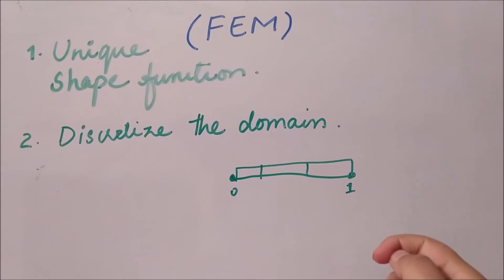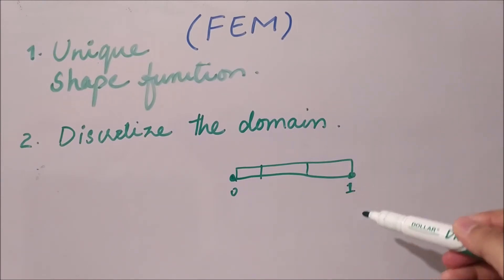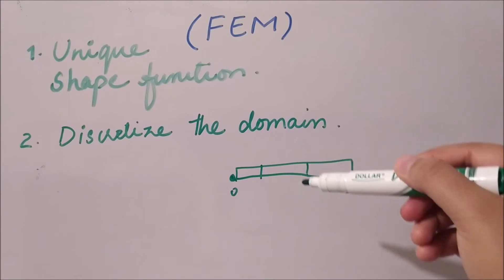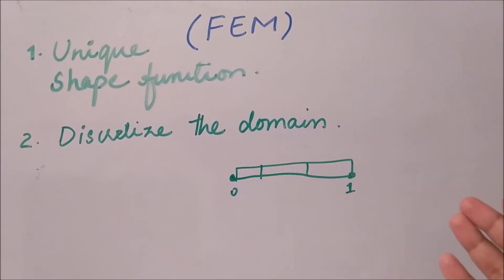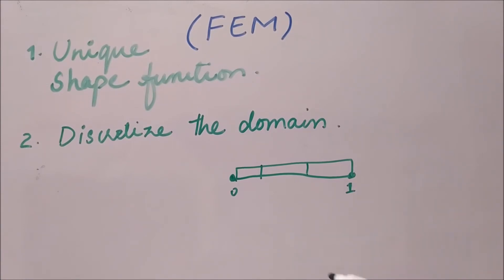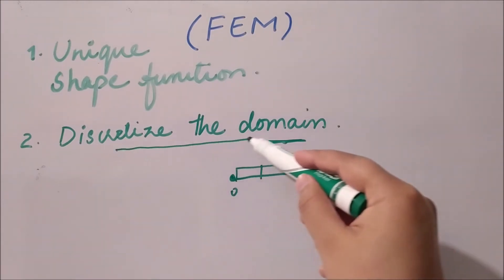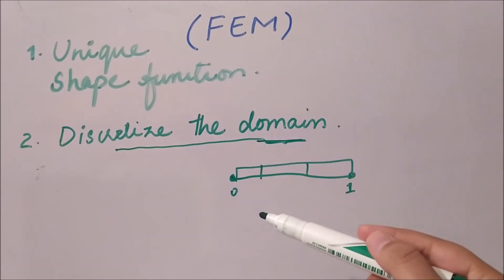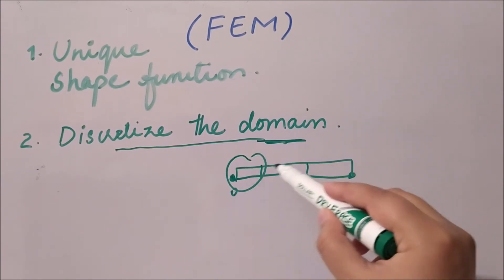Why are we discretizing the domain or shape? Because of the complexity of the geometry. That is why we need FEM instead of variational methods or the direct method — because FEM is very versatile when dealing with complex geometries, allowing us to handle complex shapes in an easy way.